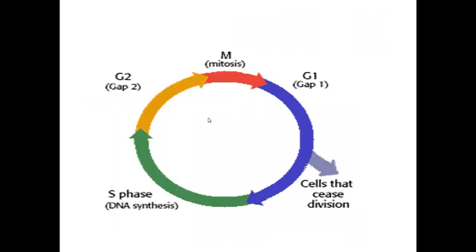So the cell has a cycle. It's either making its DNA, having a little rest — the gap part of the cycle — or dividing that DNA up by mitosis and the cell then dividing in two, then having a little rest, copying its DNA, and doing the dividing process again.